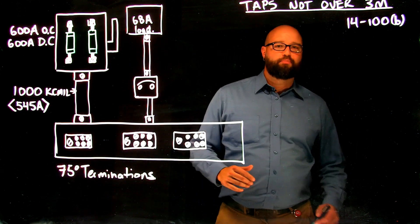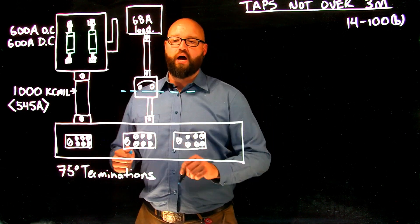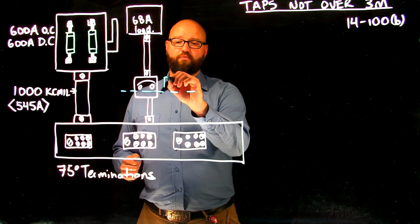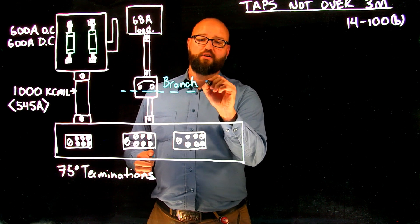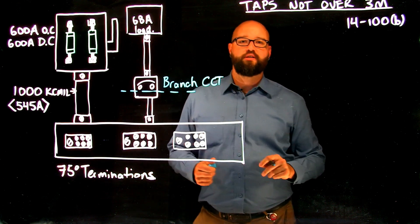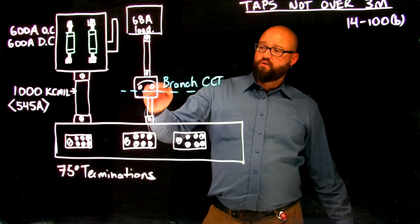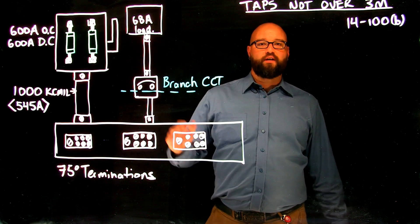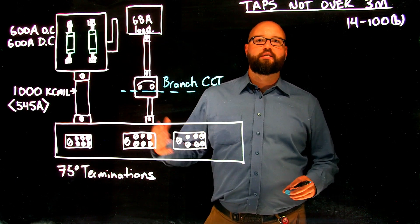So the first thing that we want to do with this is we take a look at our 68A load. Now, everything up on this side here, we're dealing with is still just a standard branch circuit calculation. And as I mentioned before, we are on the downstream side of an overcurrent device. So naturally, we're allowed to have a downsized conductor.